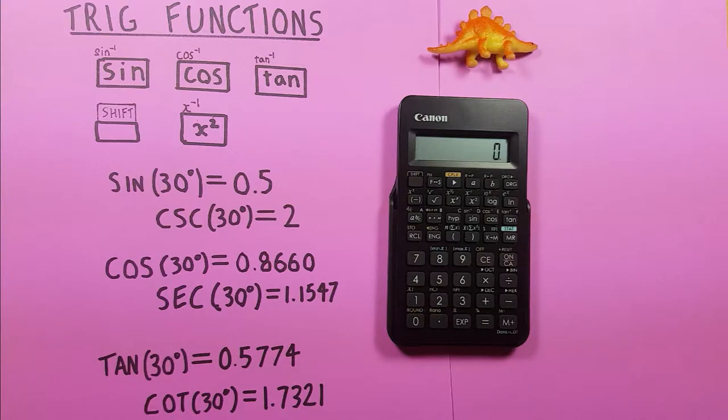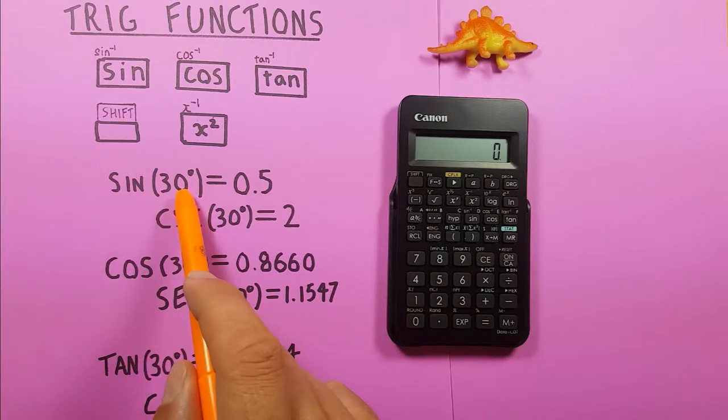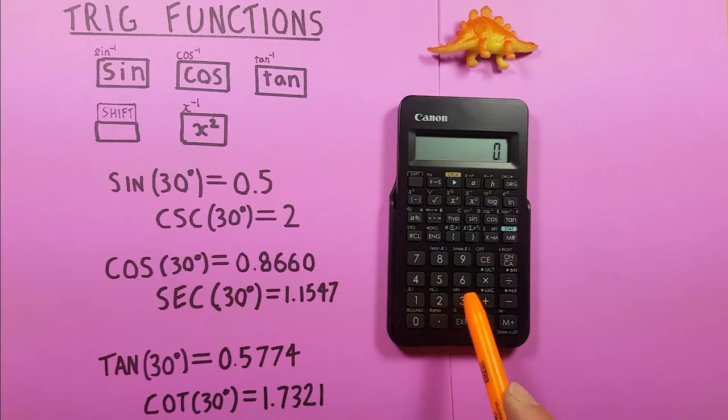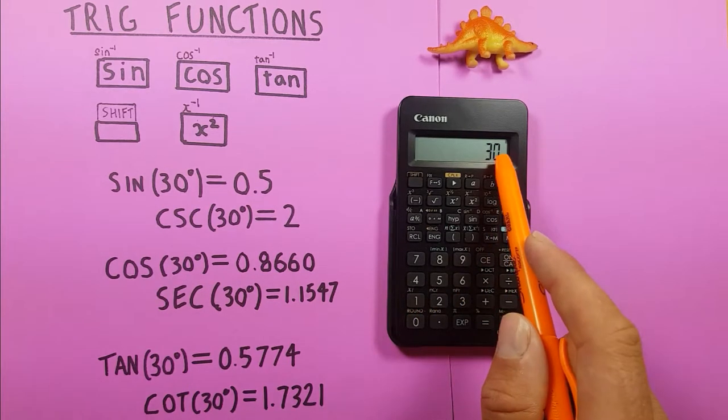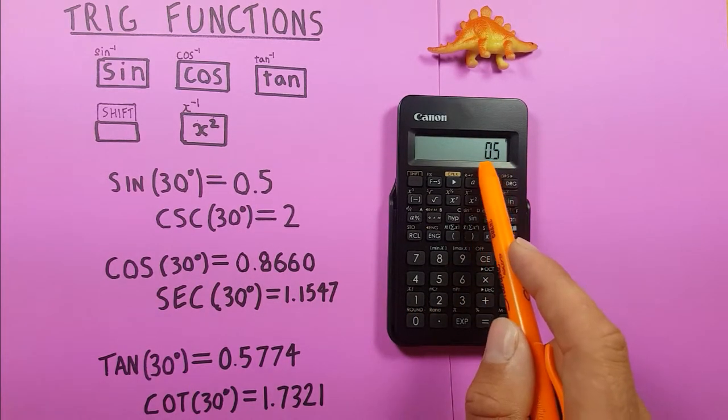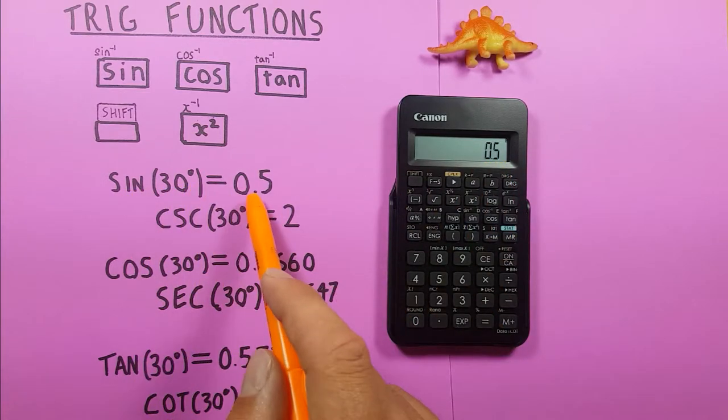Alright so first for the basics if we want to find the sine of a degree let's say sine of 30 degrees, you enter the 30 on there and press sine and you get 0.5 which is the sine of 30 degrees.